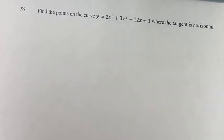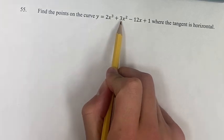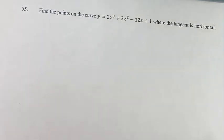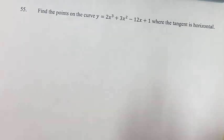Hello and welcome back to another video. This problem, we're looking at the curve y equals 2x cubed plus 3x squared minus 12x plus 1, and we're asked at what points on this curve is the tangent line going to be horizontal?